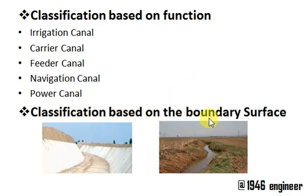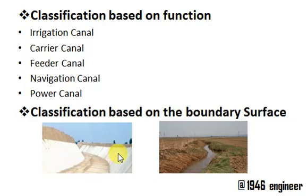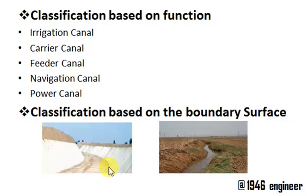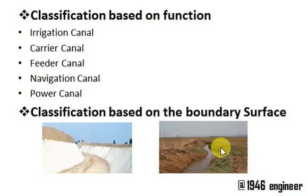Next we have classification based on boundary surface. This is a lined canal, also called a rigid boundary canal. This is an unlined canal — it does not have a rigid boundary. The rigid boundary reduces infiltration losses of water.